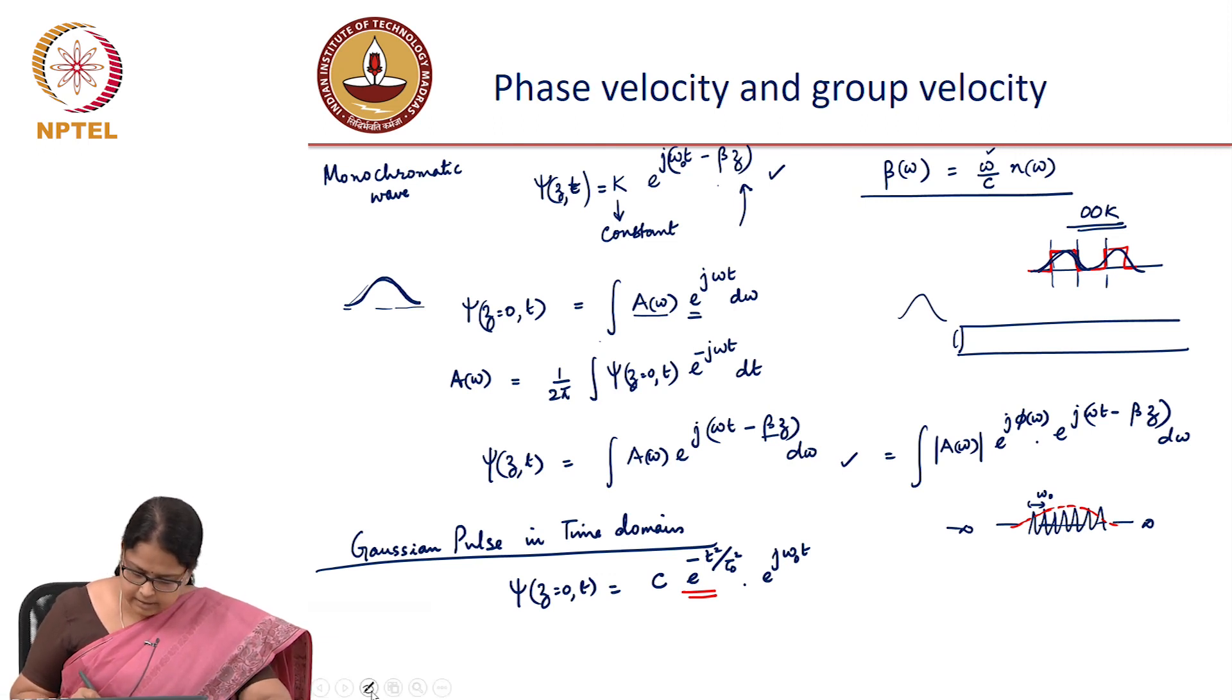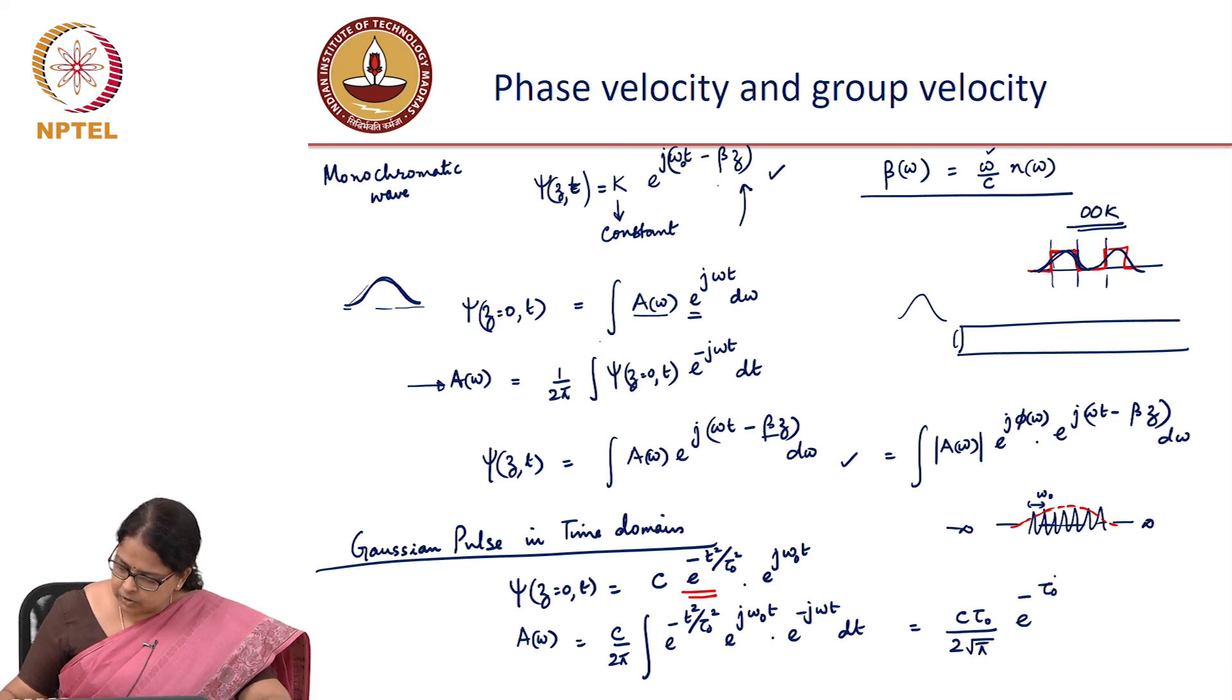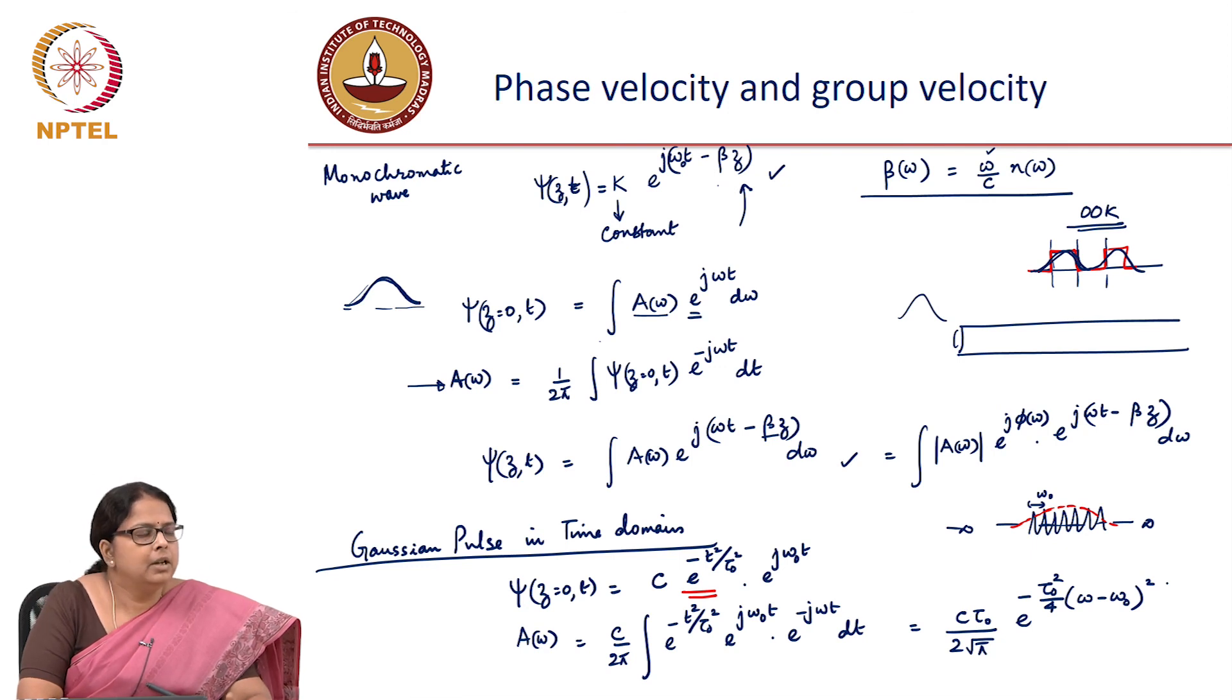Now if I have this, I can substitute and find out what my Fourier components are. So I can find out A of omega as C by 2 pi integral e power minus t square by tau naught square e power j omega naught t e power minus j omega t dt. And because it is a Gaussian function, this integration is analytically solvable. And if you work out, this answer will come out to be C t naught by 2 root pi e power minus t naught square by 4 omega minus omega naught the whole square. This is no surprise that it is looking like a Gaussian because in your fundamental signals course, you have said the Fourier transform of a Gaussian is a Gaussian. This is just that. This is why I am not deriving this. It is not very complicated to do this.